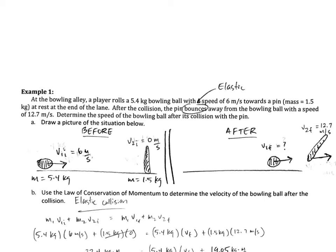This is going to be an elastic collision when objects are bouncing off of each other. At the bowling alley, a player rolls a 5.4 kilogram bowling ball with a speed of 6 meters per second towards a pin. Here's the bowling pin with a mass of 1.5 kilograms and it's starting at rest. After the collision, the pin bounces away to the right with a speed of 12.7 meters per second.